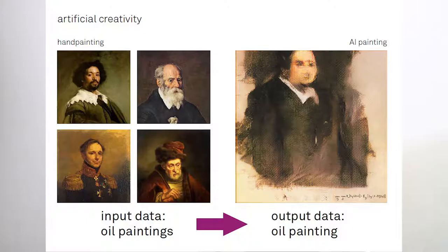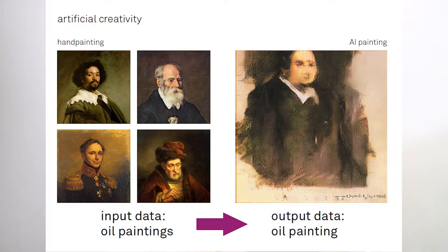I will look at artificial creativity. So the question about the input data and the output data. For example, this is an AI painting on the right side, where the algorithm was fed with oil paintings and the output is again an oil painting.